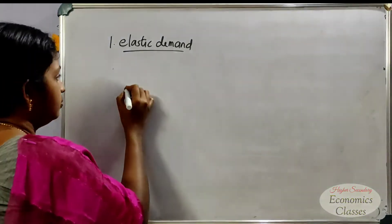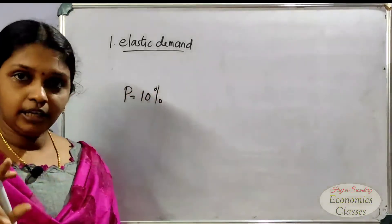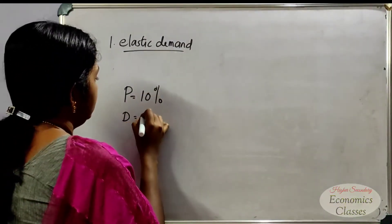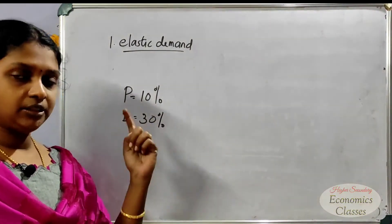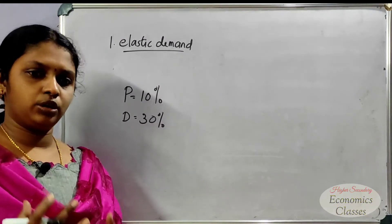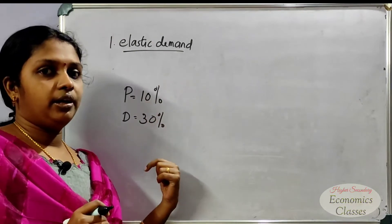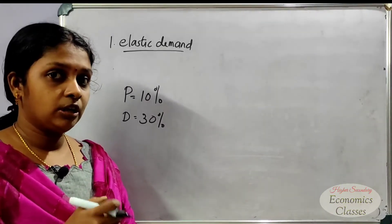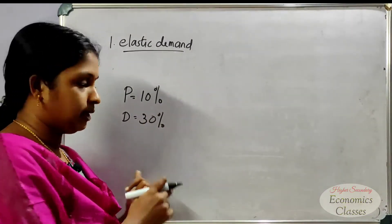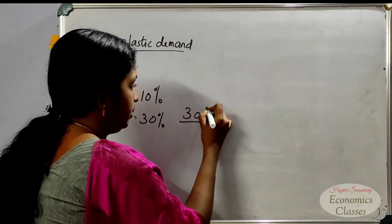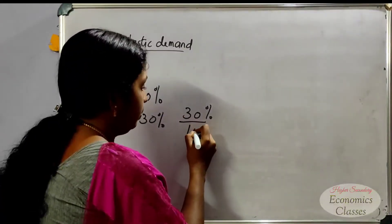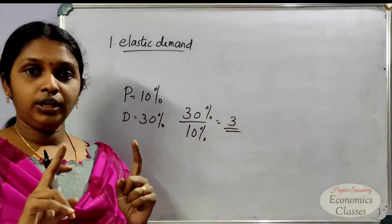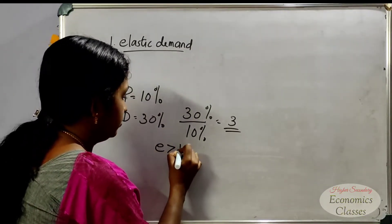For example, if price changes by 10% and demand changes by 30%, then elasticity equals 30 divided by 10, which equals 3. Since E is greater than 1, this is elastic demand.